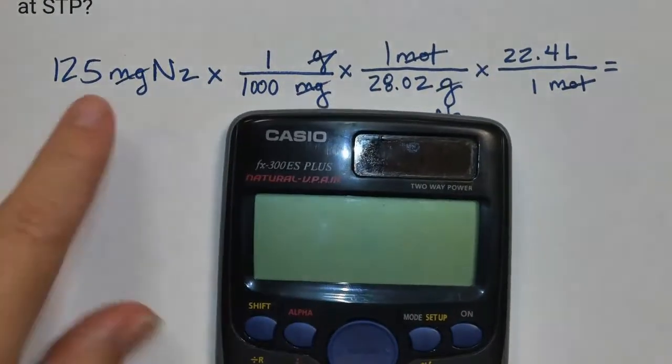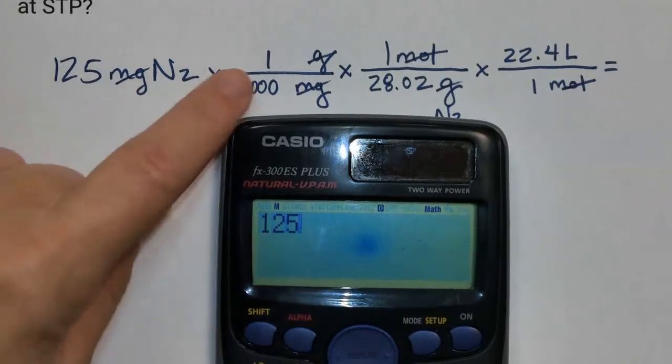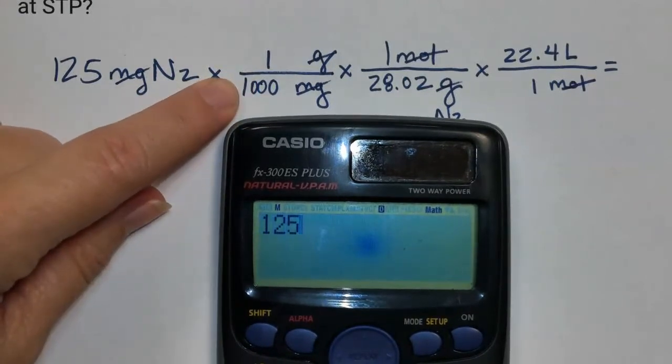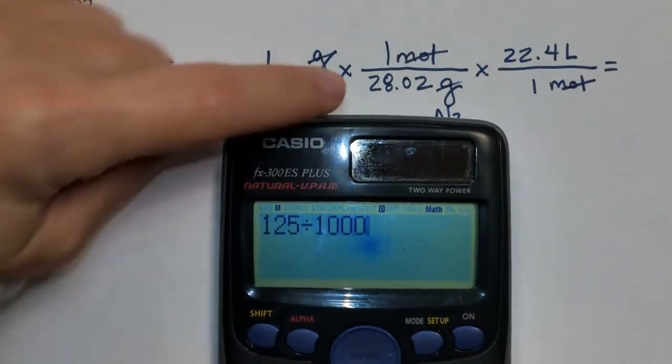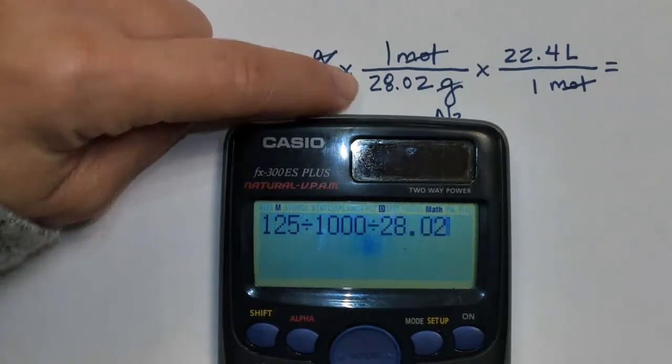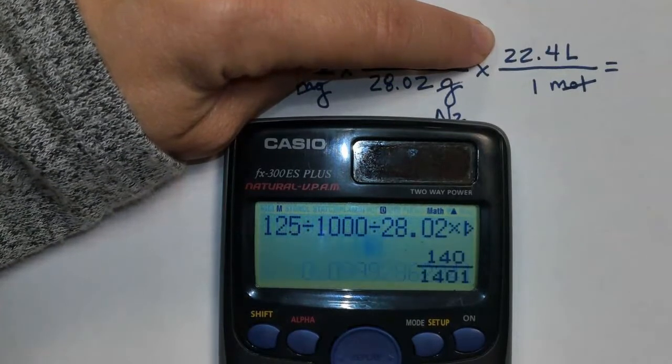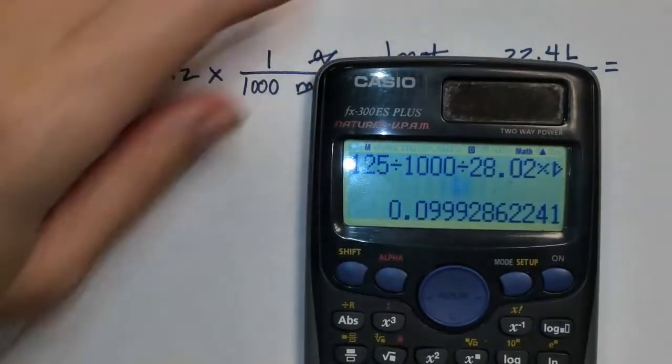I'm going to start by typing in my first number, 125. And then, because this number is at the bottom, I'm going to hit divided by 1,000. Because that's at the bottom in the denominator, I'm going to hit divided by 28.02. And because that's at the top, I'm going to hit times 22.4. And I'm going to get 0.0999.